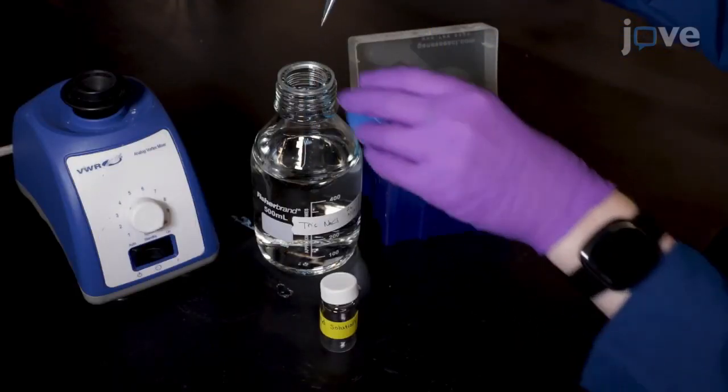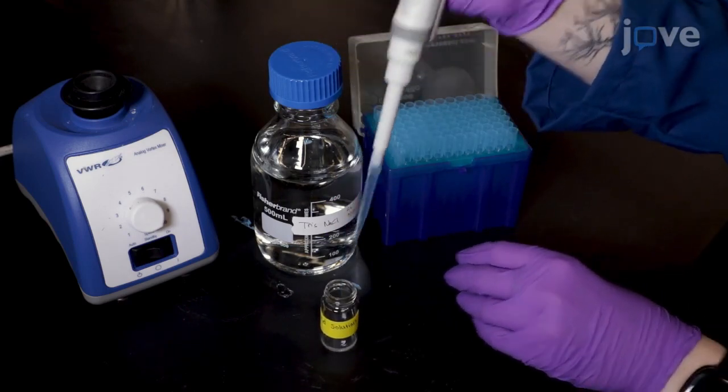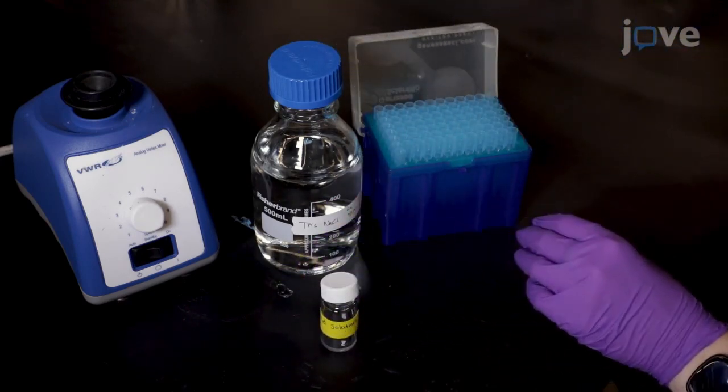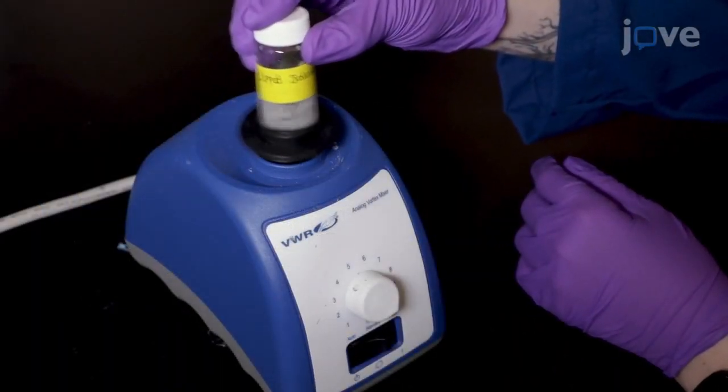Rehydrate the dried lipid film with the required volume of Tris sodium chloride buffer to yield a final vesicle concentration of 2.5 mg per milliliter and vortex for approximately 15 to 30 seconds.